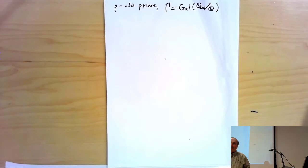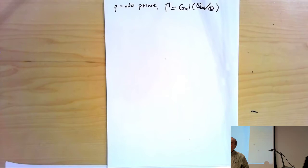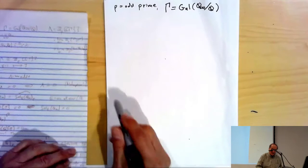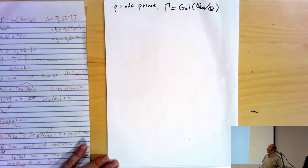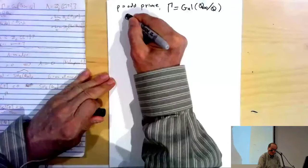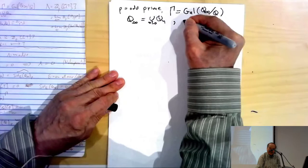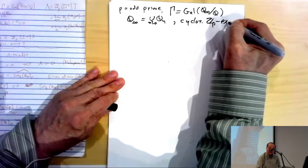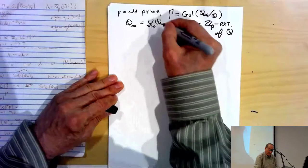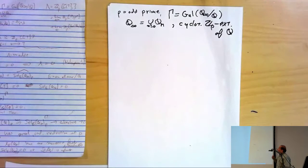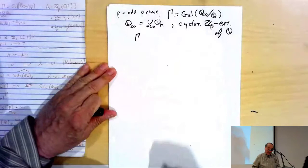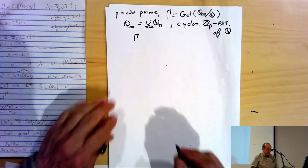But now things have changed dramatically, and just coming to the winter school and seeing what's going on is one demonstration of that fact. I'm going to assume p is an odd prime and Γ is, as usual in these lectures, the Galois group of Q∞ over Q. Q∞ is the union of Q_n's, the cyclotomic Z_p extension of Q. The Q_n's are cyclotomic extensions of Q of degrees p^n, and the Galois group Γ is isomorphic to Z_p — an inverse limit of those cyclotomic groups of order p^n.